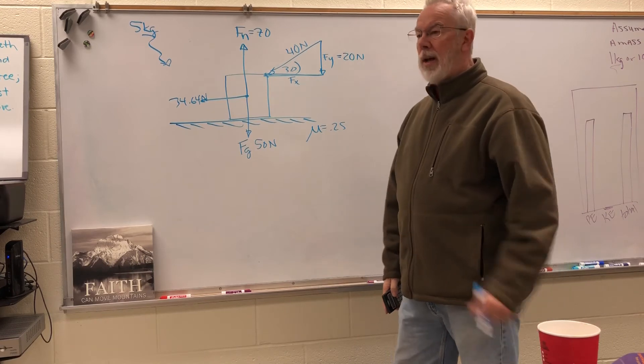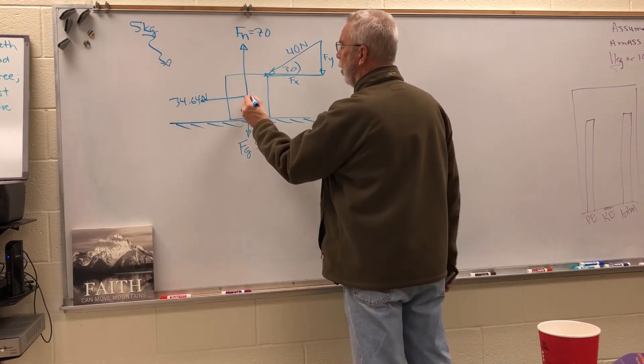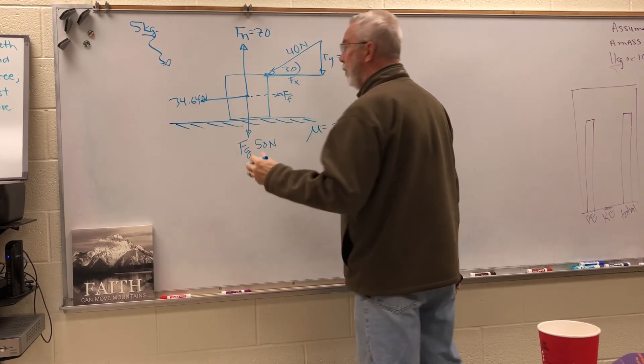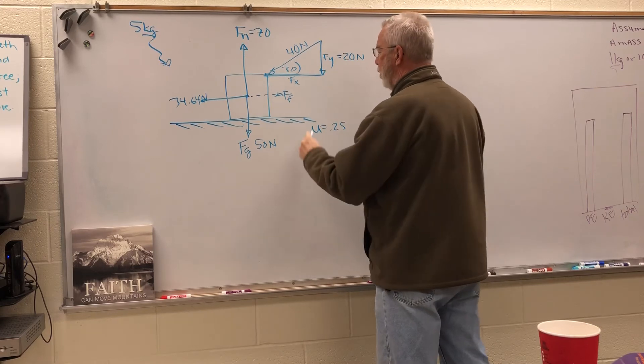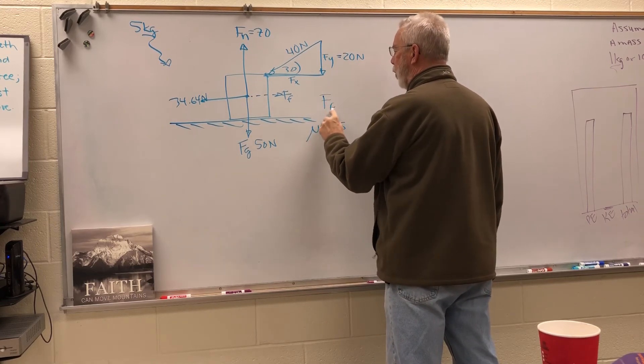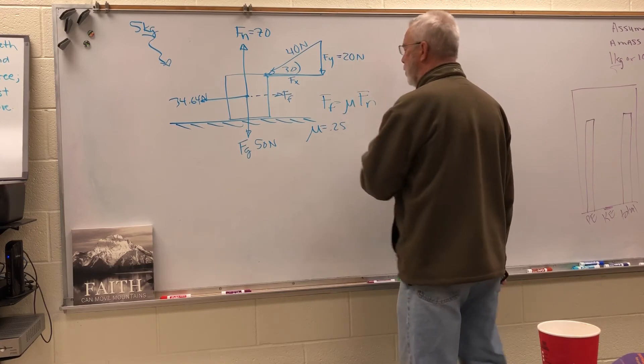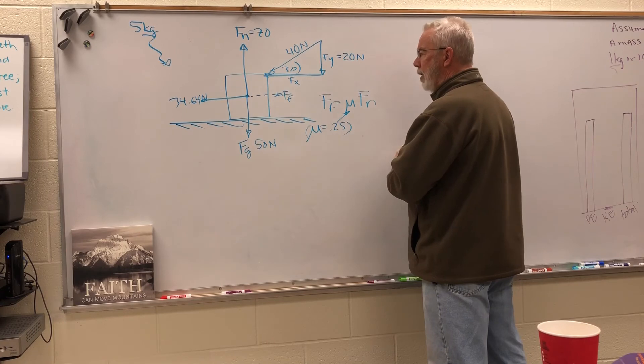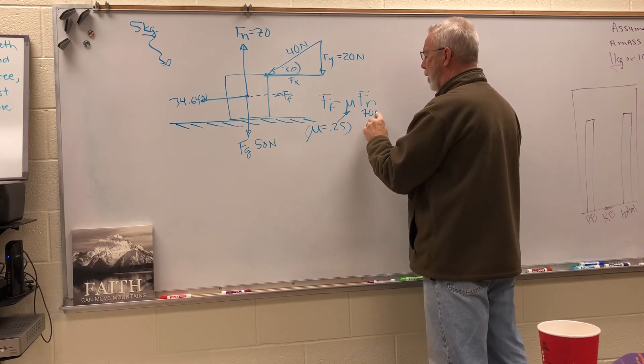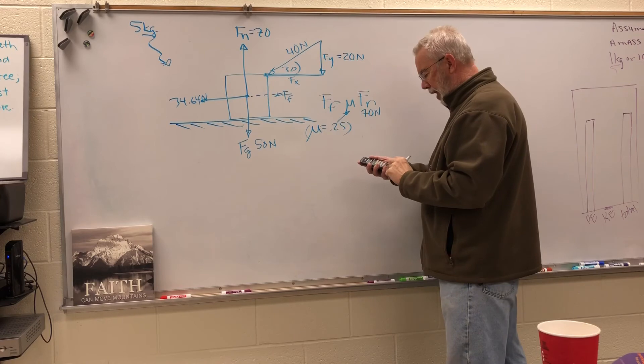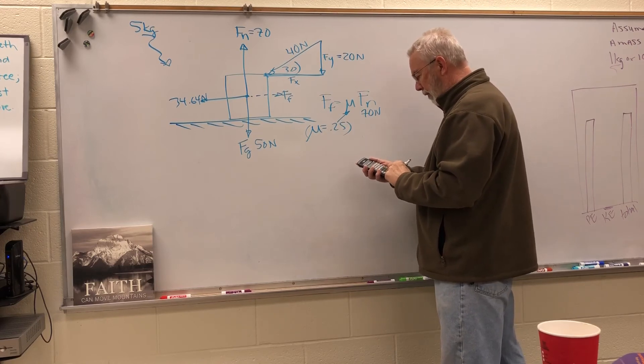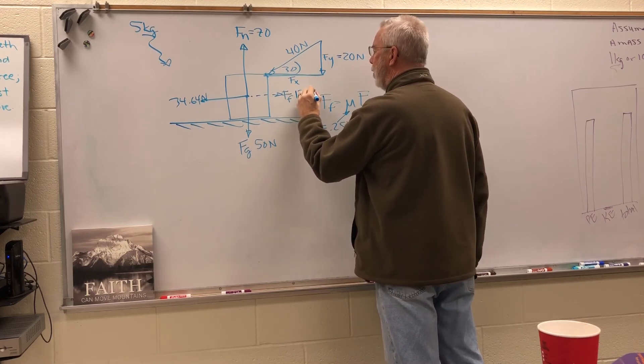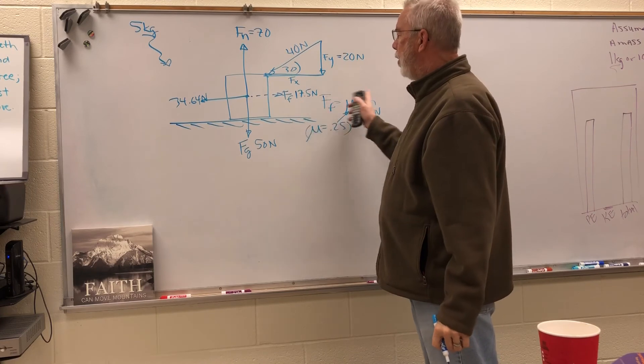Now, last but not least, we need to have this frictional force over here. From a previous problem we know that the frictional force is equal to the coefficient of friction times the normal force. The coefficient of friction is going to go right in there, and now we have the normal force of 70 newtons. So 70 times 0.25 is 17.5.